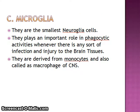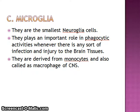Microglia are the smallest neuroglia cells. They play an important role in phagocytic activities whenever there is any infection or injury to the brain tissue. They are derived from monocytes and are also called macrophages of the CNS. Their main function is phagocytosis.